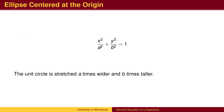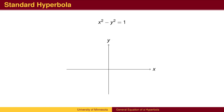Recall that we arrived at the general equation of an ellipse by stretching the unit circle x squared plus y squared equals 1. The equation of the standard hyperbola is similar to the equation for a circle or an ellipse, except one of the squared terms is negative.